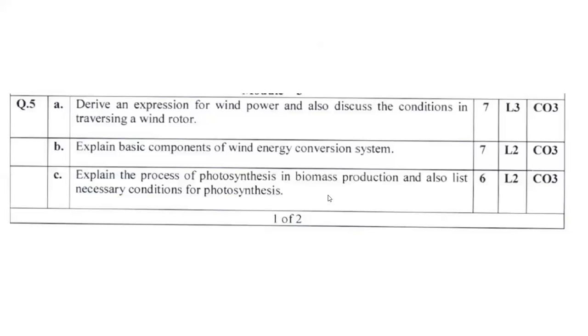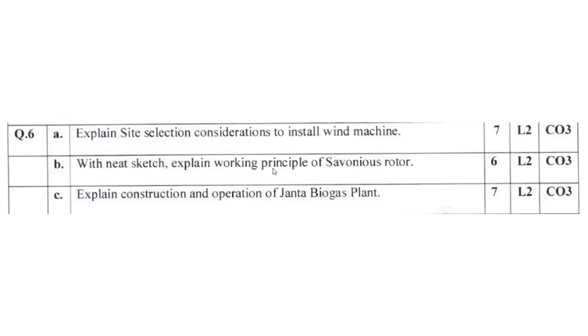Explain the process of photosynthesis in biomass production. Also list the necessary conditions of photosynthesis, which is also having 6 marks. You might have studied in biology. What is the chemical equation you can write, and there's some simple diagram, some cycle that you can mention. It has the weightage of 6 marks. Weightage is 7 marks.